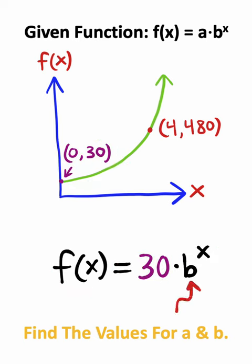So all we need to do from here is calculate b, and we can do this by using the second point that we have. So I'll take the x-coordinate, which is 4, and plug it in for x, and then I'll take the y-coordinate, which is 480, and plug it in for f of x.